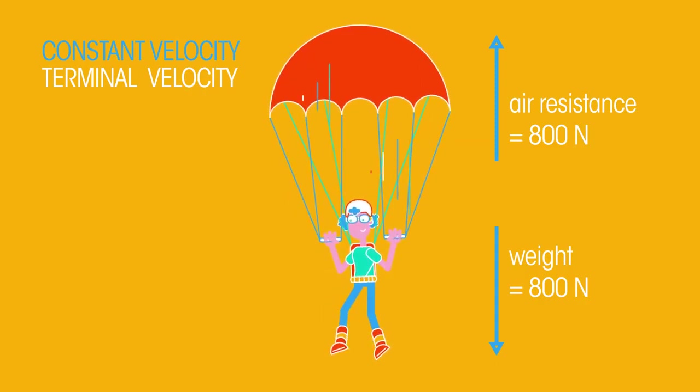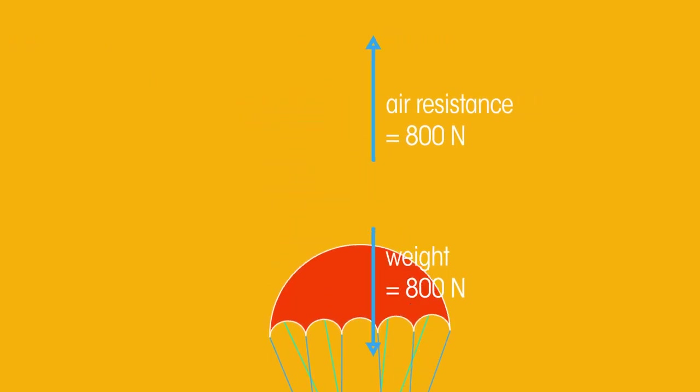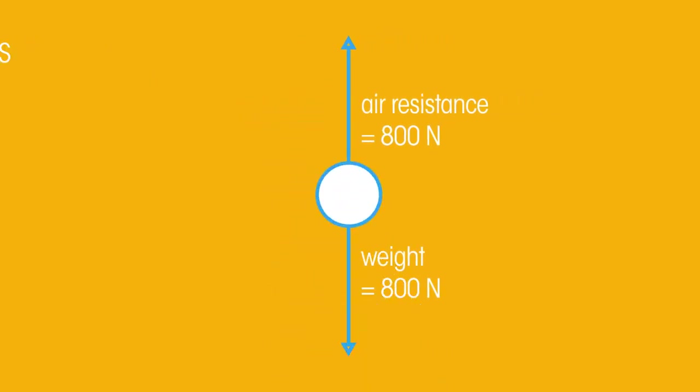We can also draw these force diagrams without showing the object involved. These are called free body diagrams. For example, here is a free body diagram of the forces acting on the parachutist. In a free body diagram, the object is shown as a point. The forces are drawn as arrows starting at the point. The length of the arrow indicates the magnitude of the force and the direction of the arrow shows the direction of the force.